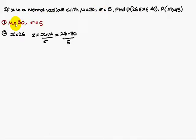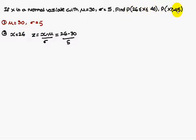Given: mean mu is 30 marks and standard deviation sigma is 5 marks. For the first part, we find the probability of 26 less than or equal to X less than or equal to 40 marks. Similarly for X greater than or equal to 45. What we have to do is convert each value — 26, 40, and 45 — in terms of Z.